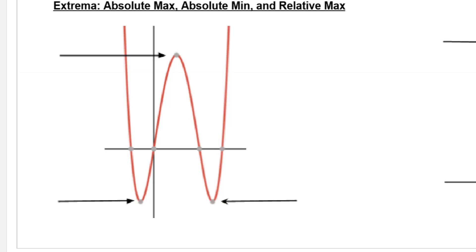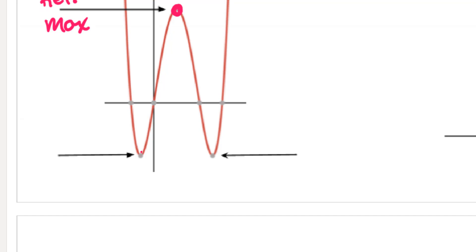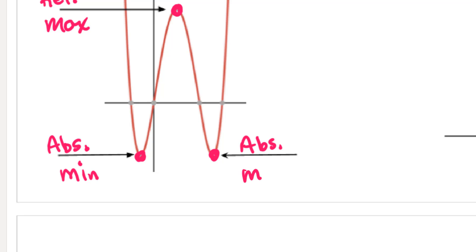Sometimes we'll have a function like this. Here's one spot — that's the top of a hill, but there are parts higher, so again this would be called a relative max. Now these two points down here — this spot and this spot — there's nothing lower than those; those y-values would be the same. So those would be called absolute minimums. You have absolute minimums when there's nothing lower than that point on the curve.